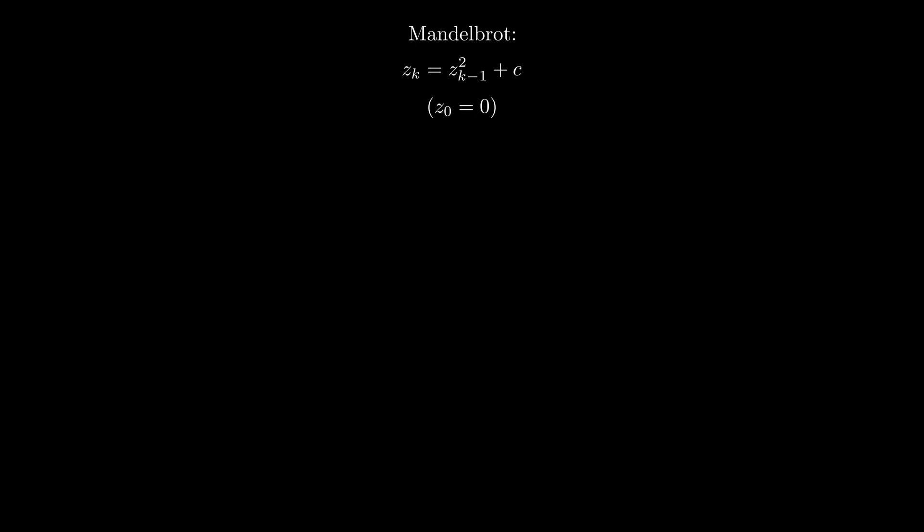We already inverted the landscape in a previous video. In that video, we modified the Mandelbrot equation by raising the constant C to a changing power. We then slowly transformed the Mandelbrot set into its inverse by gradually changing this power from 1 to minus 1.